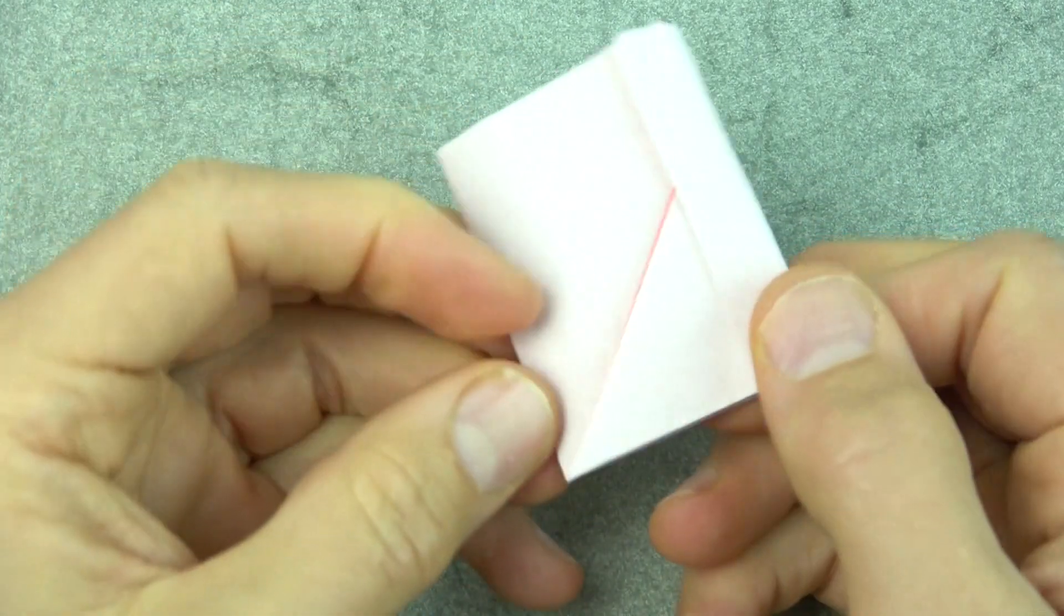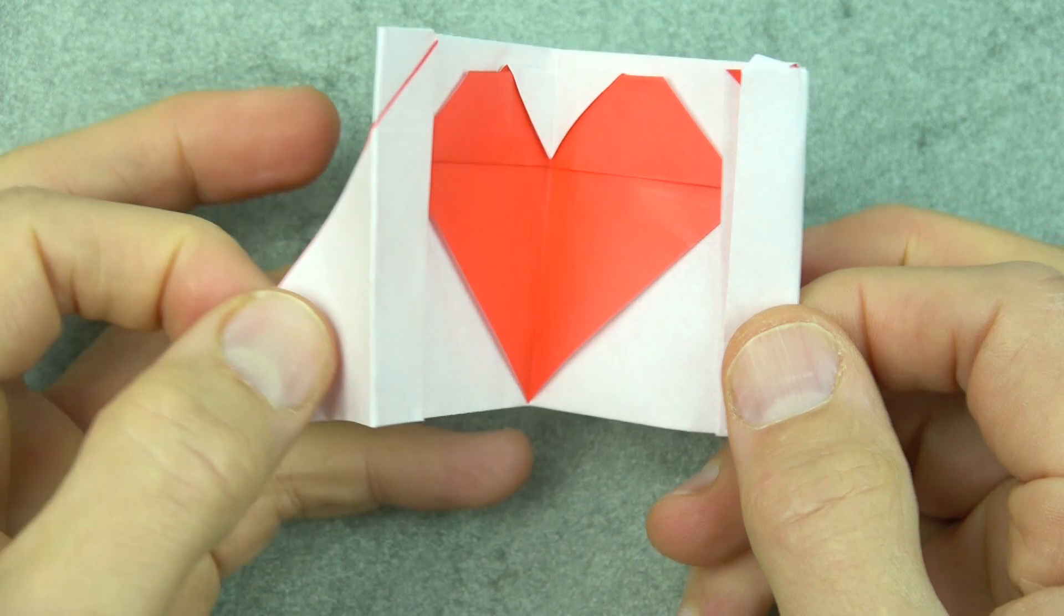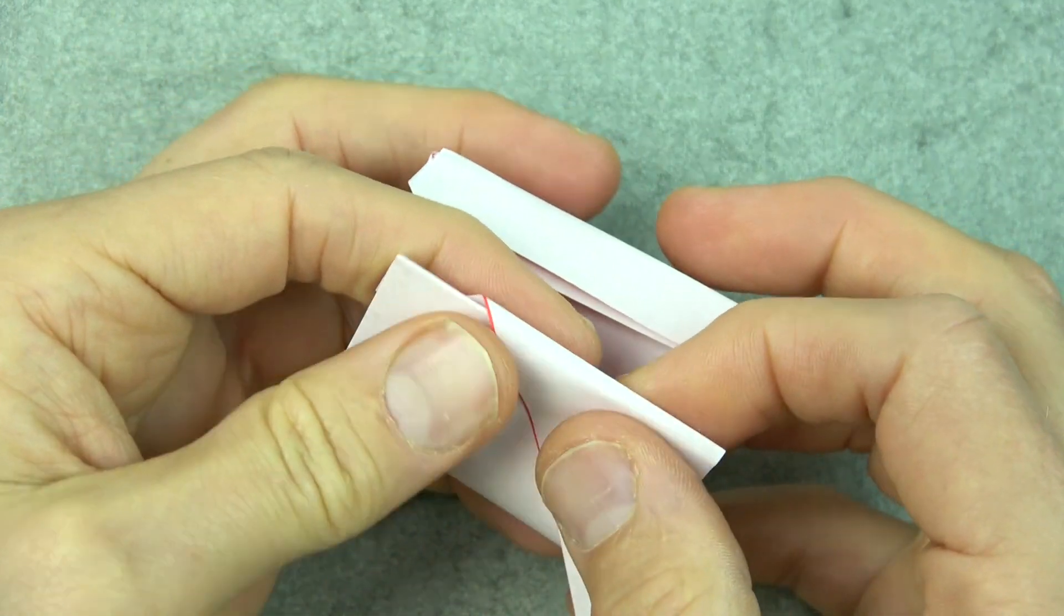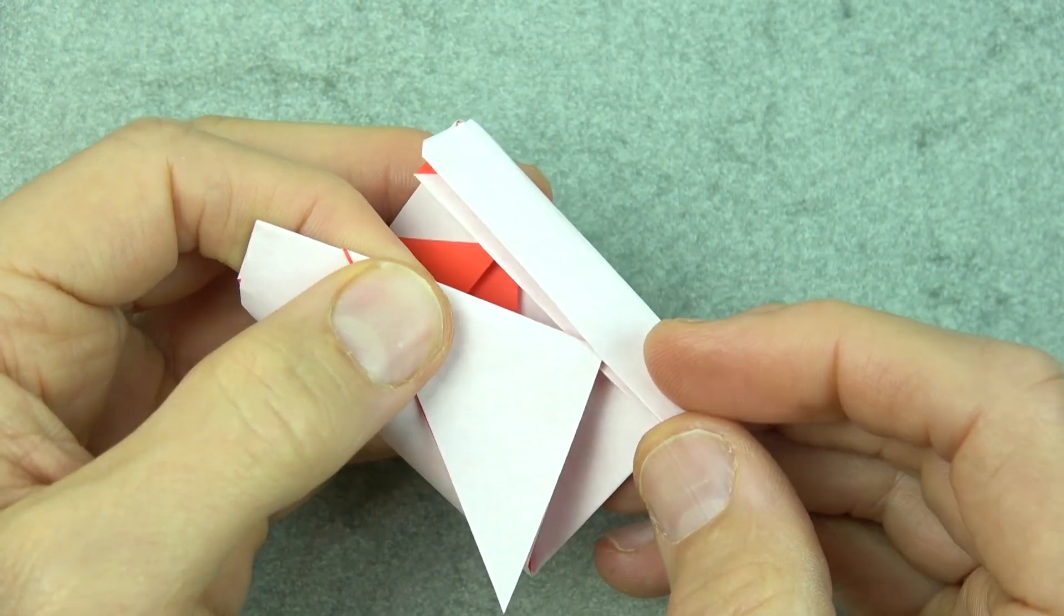So like this, this is like the tab of the card and you can just pull it out and there's the heart. If you like it like that then you're done, but I'm going to show you how to make an upside down heart with this tab.